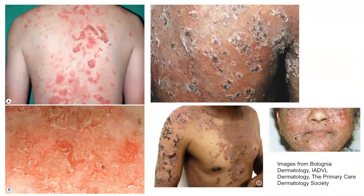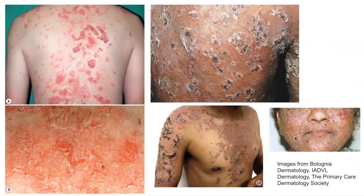Here are a number of images demonstrating the scaly, crusted, eroded lesions associated with Pemphigus foliaceus, typically over seborrheic areas. Mucosal involvement is usually not present in Pemphigus foliaceus.